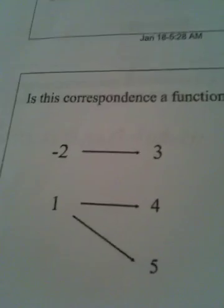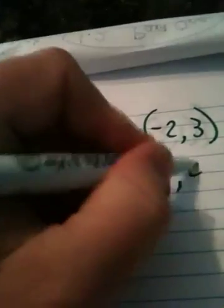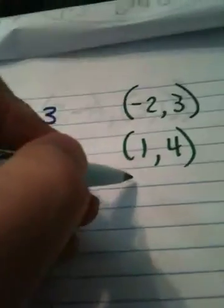The next question here—and I think the way it asks this in your notes is: is this correspondence a function and explain? Well, the correspondence this time: negative 2 gets paired with 3, 1 gets paired with 4, then 1 also gets paired with 5. I think you can immediately see that we've got a problem. The problem is with 1.